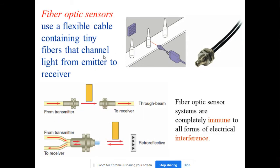We can also use fiber optic. Use a flexible cable, which contains tiny fibers that channel light from the emitter to the receiver. These fiber optic sensors are completely immune to all forms of electrical interference. That's why now most of the sensors, they want to move to this fiber optic because of this reason.